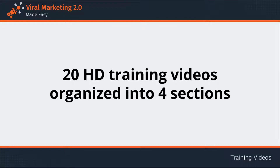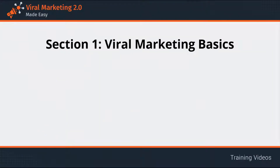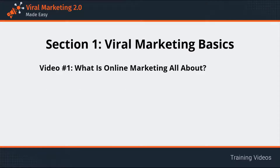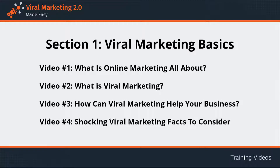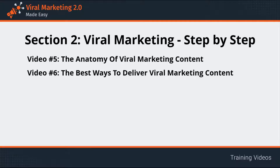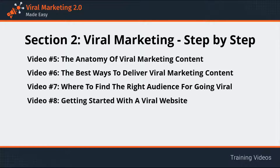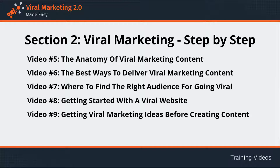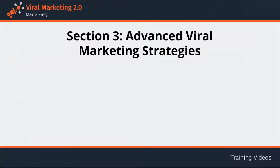This video training is comprised of 20 HD training videos organized into four sections. Section 1: Viral Marketing Basics, in videos 1 through 4, covers what online marketing is all about, what viral marketing is, how it can help your business, and shocking viral marketing facts. Section 2: Viral Marketing Step by Step, in videos 5 through 10, covers the anatomy of viral content, best delivery ways, finding the right audience, getting started with a viral website, getting viral marketing ideas, and creating a profitable viral post.